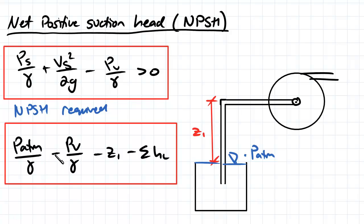When pumping from a free surface, with the pump at a distance z1 from the surface, we need to ensure that the net positive suction head available is greater than zero.